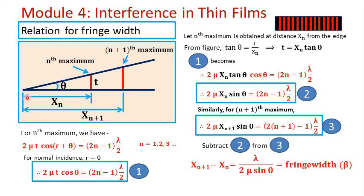For that, let us say that the nth bright band is obtained at distance xn from the point of contact, and the (n+1)th bright band is obtained at distance xn+1 from the point of contact. So the fringe width here will be xn+1 minus xn. This is where the center of the nth order maximum is obtained, and this is where the center of the (n+1)th order maximum is obtained. So xn+1 minus xn will be equal to the fringe width.